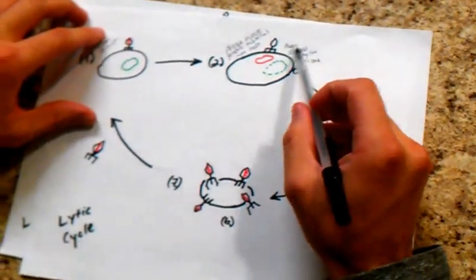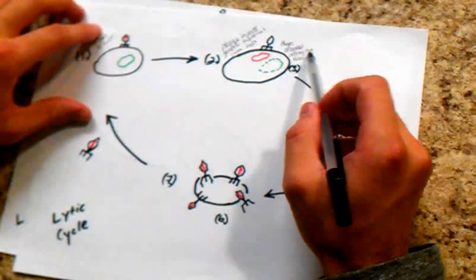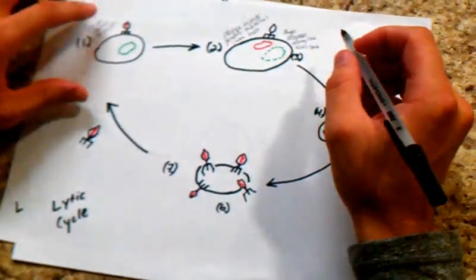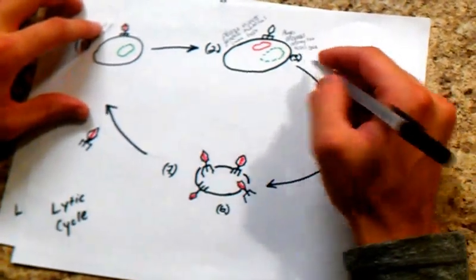Then, as it's happening, the phage's enzymes are destroying the host's DNA. So you see here, this is breaking up the host's DNA.